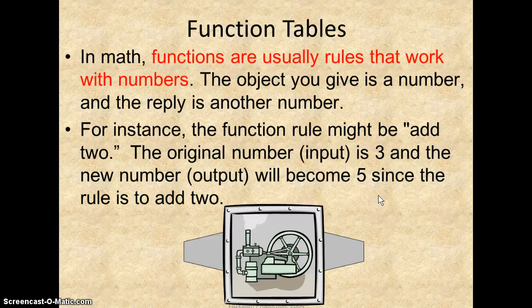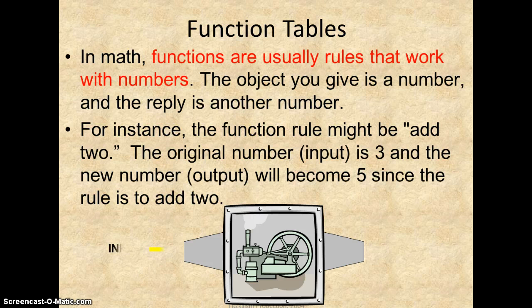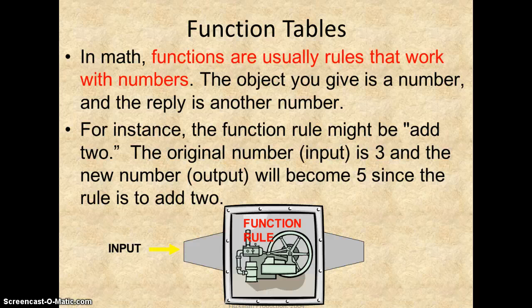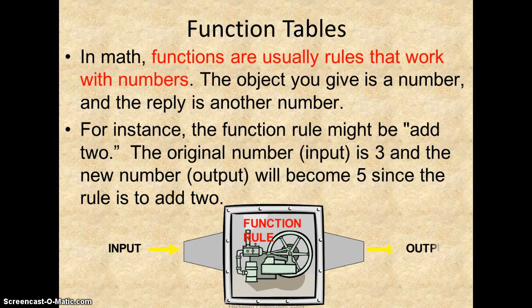Basically you get a number. That number is what we call the input. We take it through what we call a function rule, which might be add 3 or add 2. And the outcome is what comes out of that addition or subtraction, multiplication or division, depending on what the rule is.